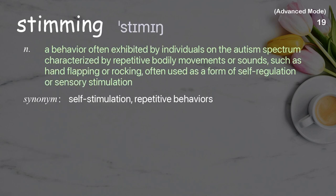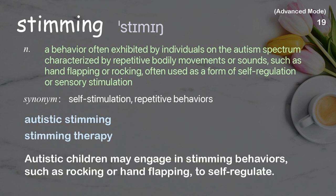Stimming. A behavior often exhibited by individuals on the autism spectrum, characterized by repetitive bodily movements or sounds, such as hand flapping or rocking, often used as a form of self-regulation or sensory stimulation. Examples: Autistic stimming. Stimming therapy. Autistic children may engage in stimming behaviors, such as rocking or hand flapping, to self-regulate.